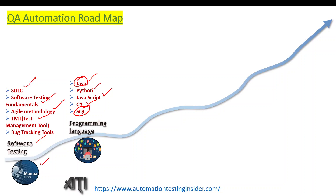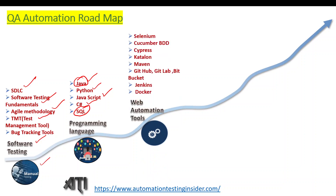Once you learn a programming language, you can go for web automation tools. Selenium is the most popular one — Java plus Selenium is very popular nowadays. You can choose Selenium as your web automation tool, then go for Cucumber BDD framework after learning Selenium, which is very easy. We also have Cypress and Katalon as other web automation tools.